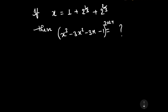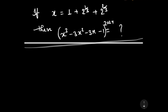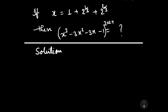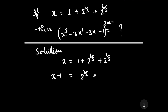Let us start to solve this question. It is given that x is equal to 1 plus 2 to the power 1/3 plus 2 to the power 2/3. This can be rewritten as x minus 1 is equal to 2 to the power 1/3 plus 2 to the power 2/3.